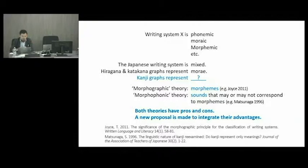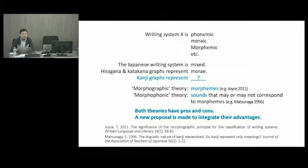The Japanese writing system has a special place in this practice because it is often described as being a mixed system. Why mixed? Because it employs a mixture of sets of graphs that differ from each other in terms of both form and function.